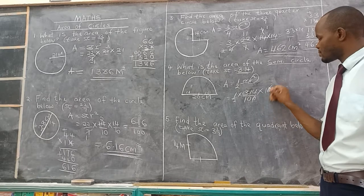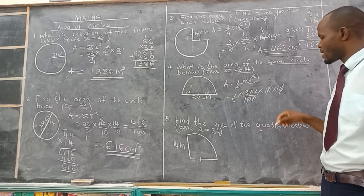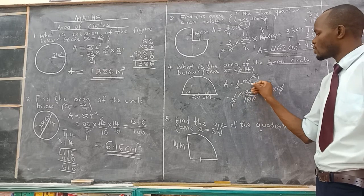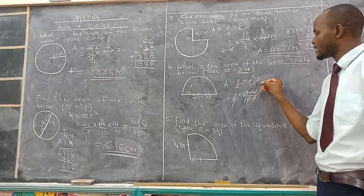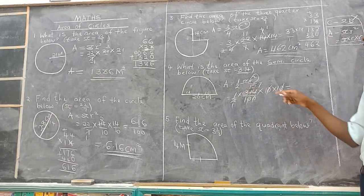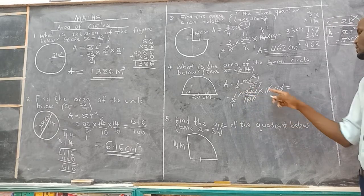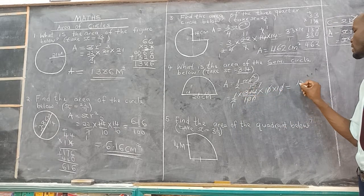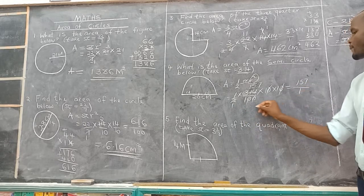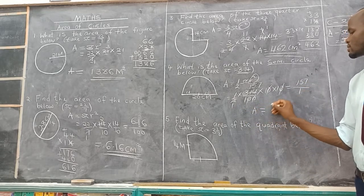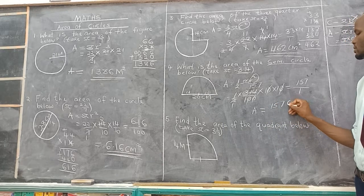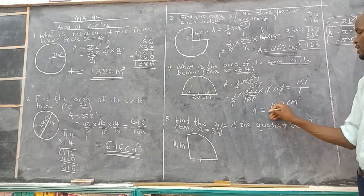Working through the calculation: 314 divided by 2 gives 157. Then 1 times 157 gives 157, over 1, so our area is 157 centimeters squared.